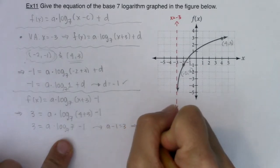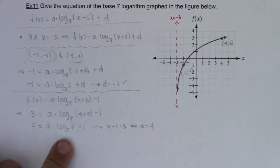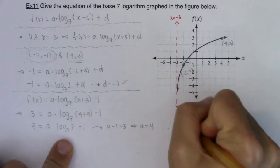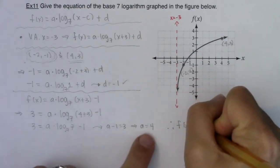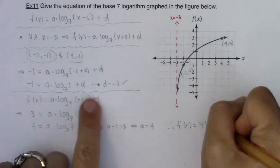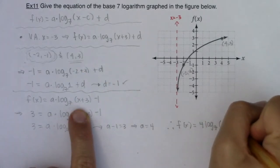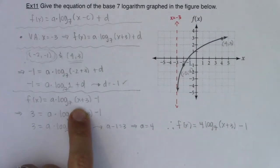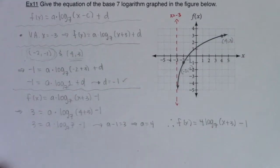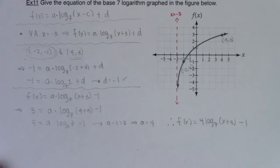So that means when all is said and done, my original function was equal to 4 log base 7 of (x + 3) minus 1. From the graph I was able to get the equation of the function. I was able to figure out my vertical stretching, my horizontal shifting, and my vertical shifting.